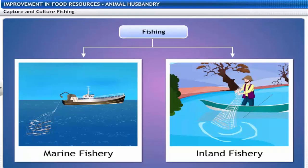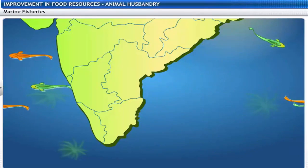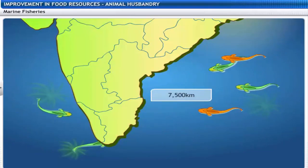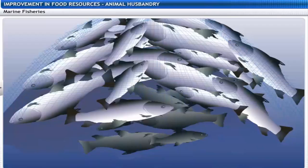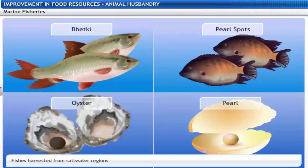Fishing is classified into two types depending upon the resources used: marine fishery and inland fishery. Fishing in saltwater regions like seas and oceans is called marine fishery. Marine fishing resources include 7,500 kilometers of the Indian coastline. Popular marine fish varieties include pomfret, mackerel and tuna. Marine fish of high economic value like bhetki and pearl spot are farmed in seawater, along with shellfish such as prawns, mussels and oysters. Oysters are cultivated for the pearls they make.